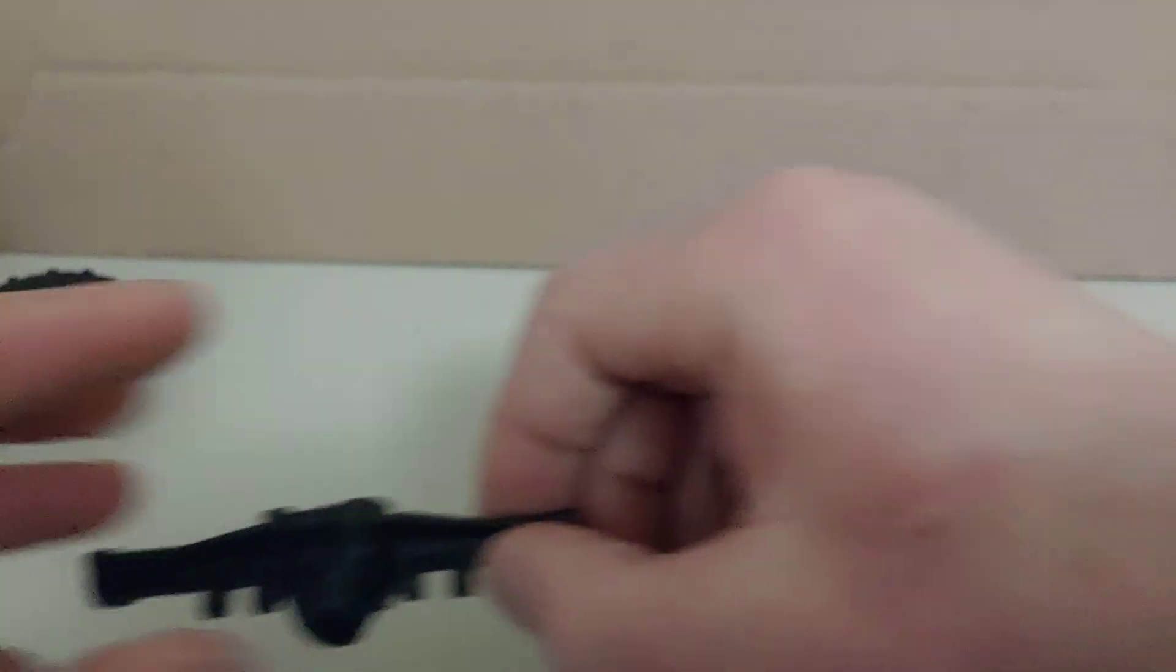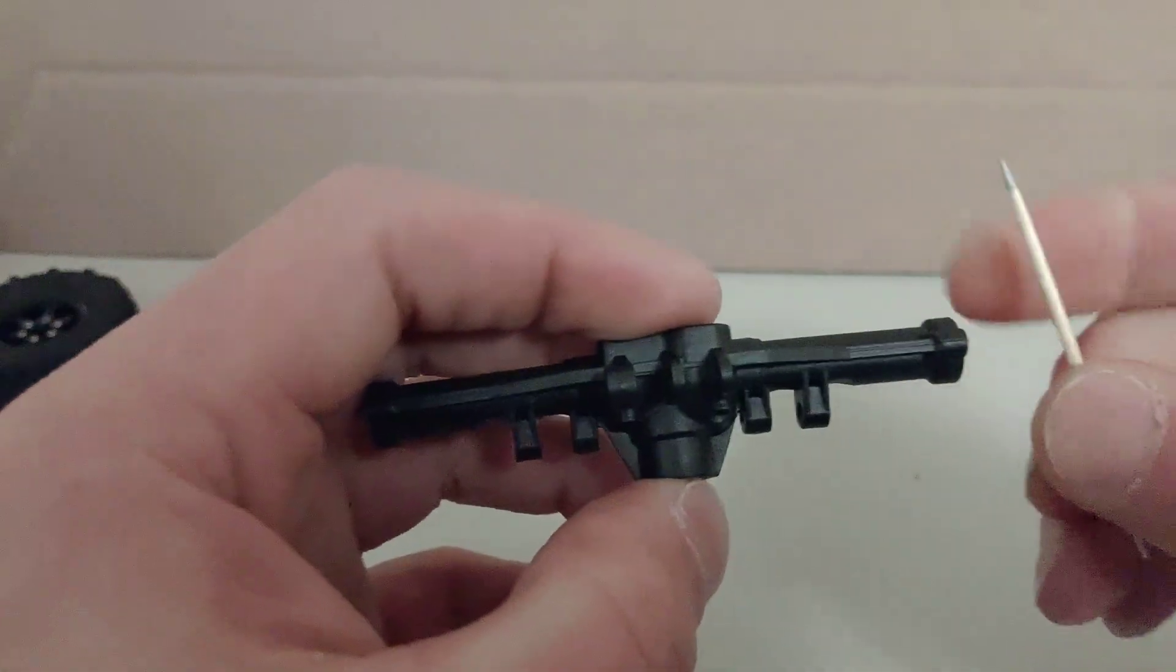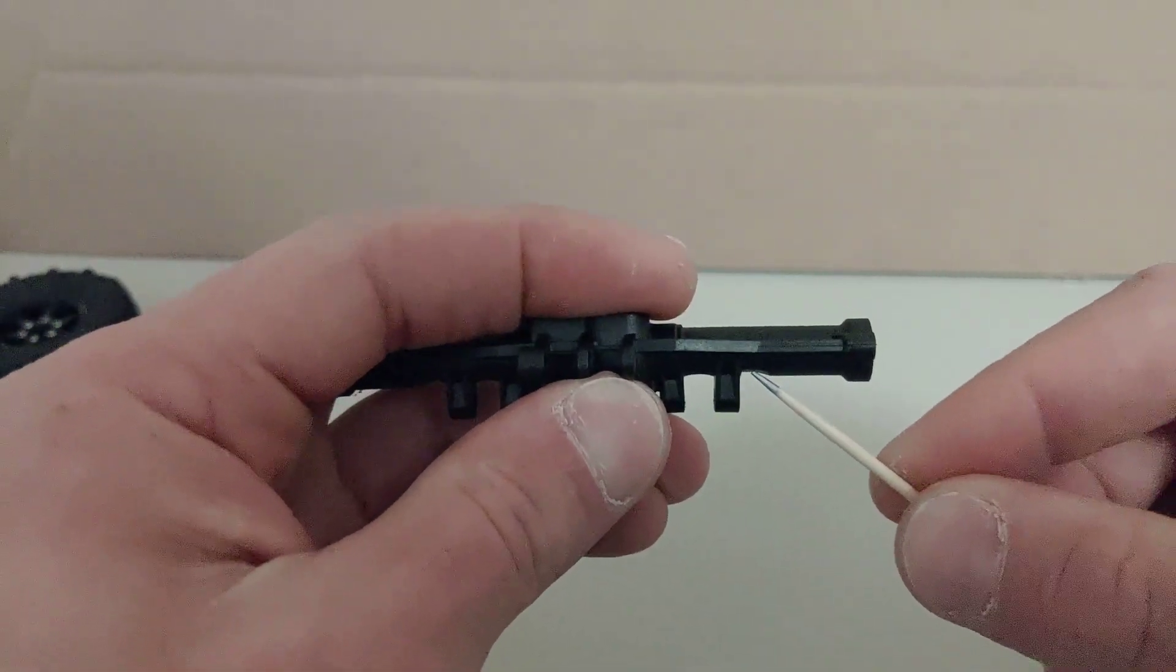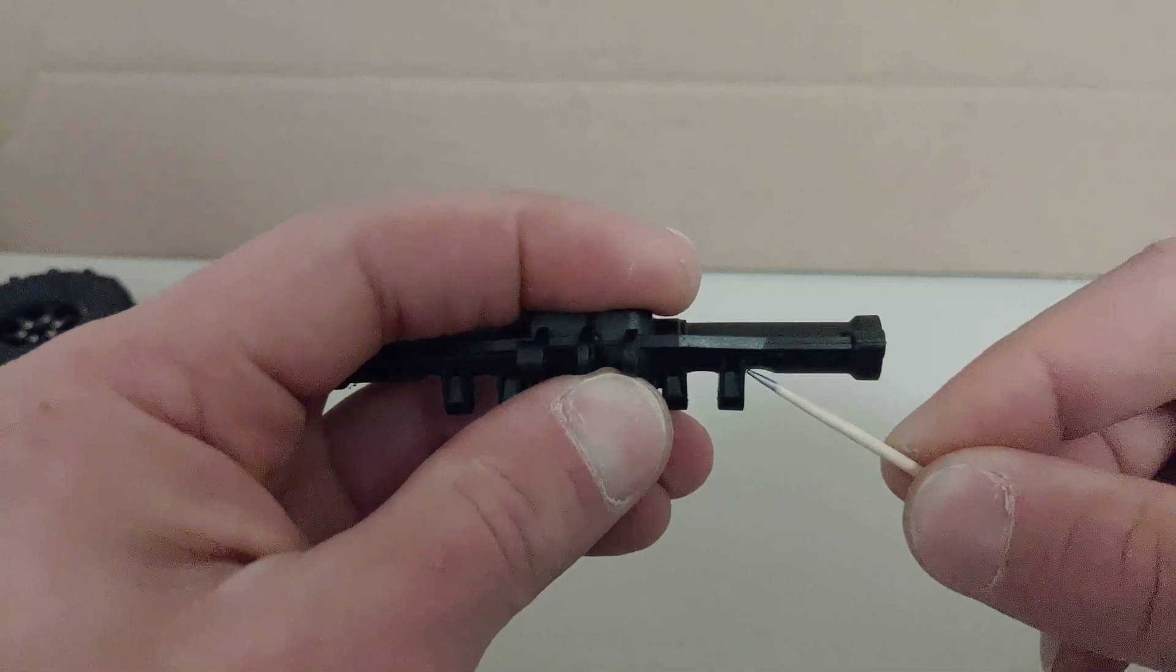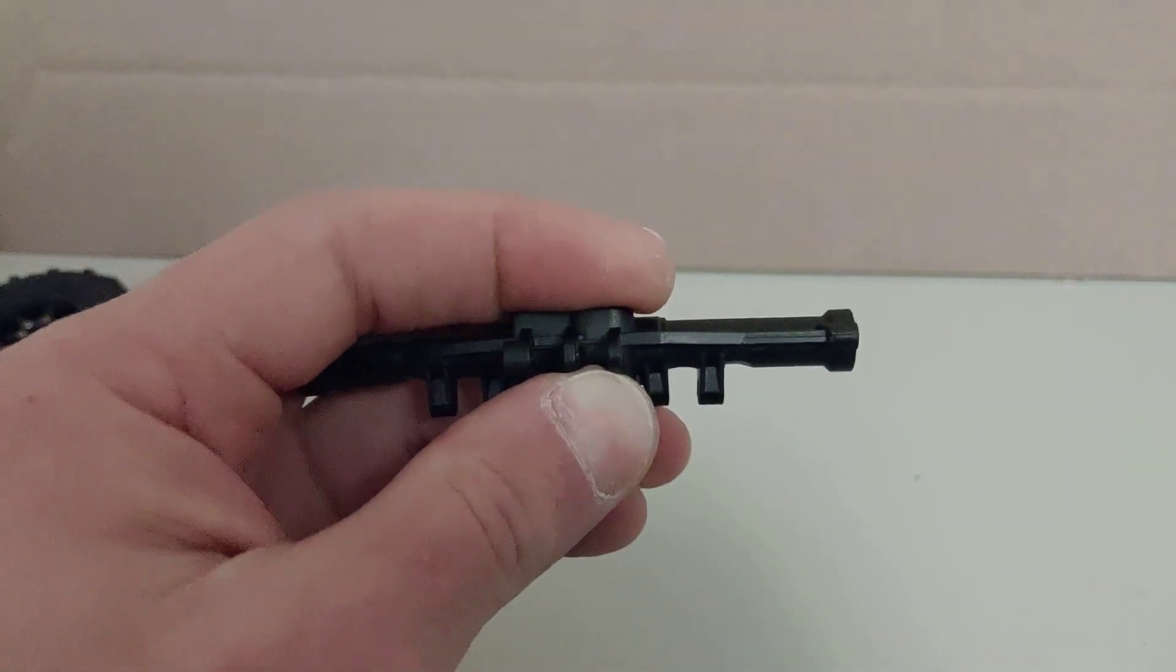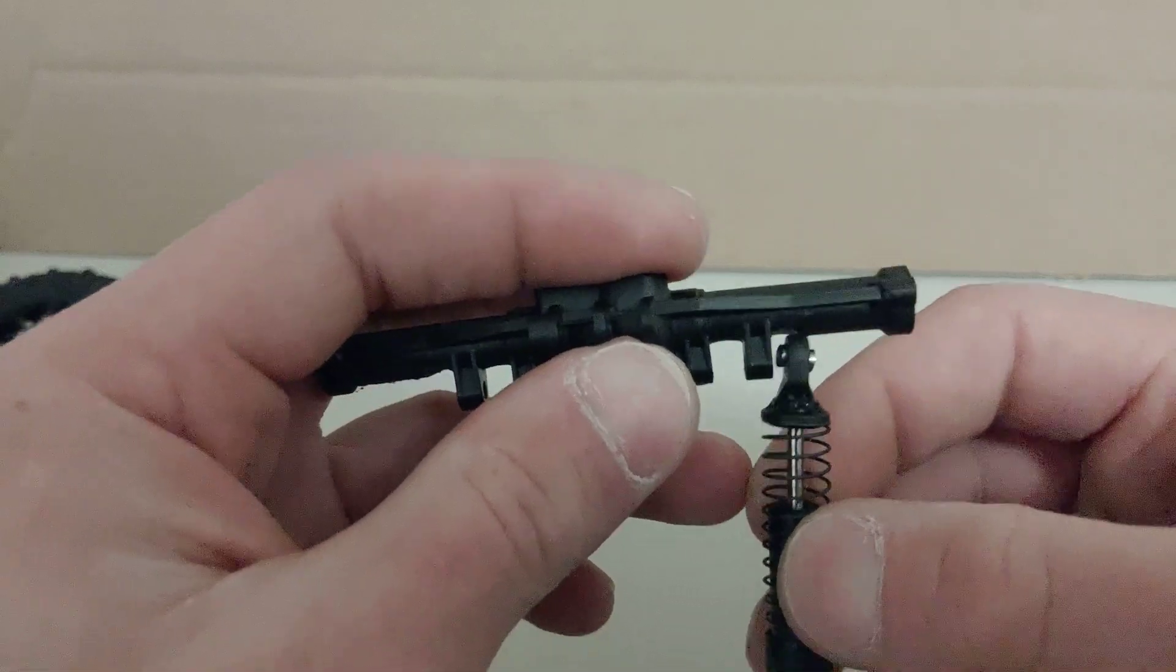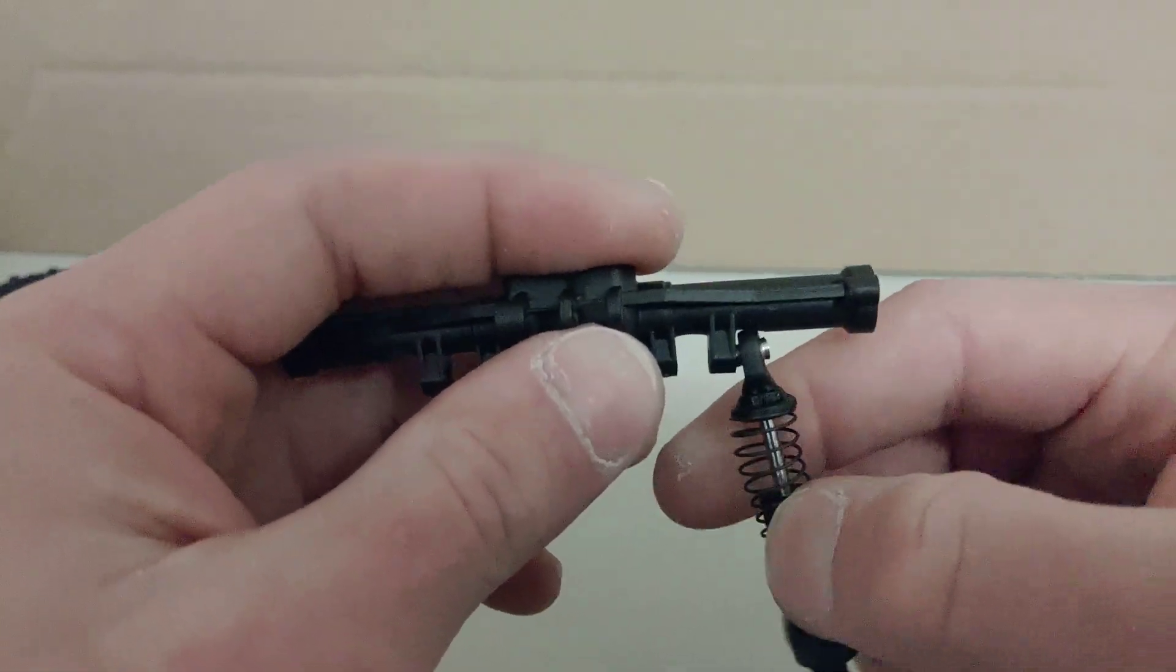So what you have to do is you have to cut that angle, the piece, so it's flat right there. So then when you screw this in, there's no resistance whatsoever. It's free to move however it wants.